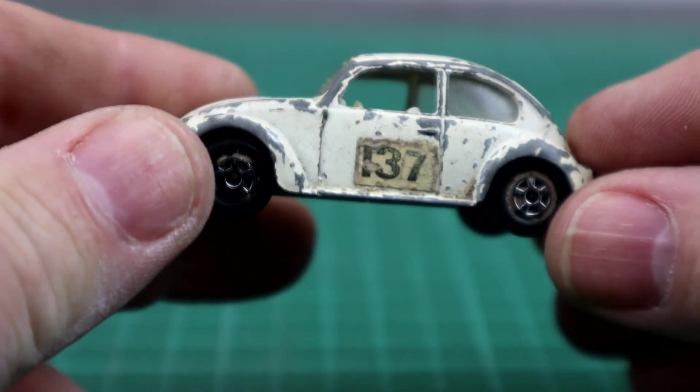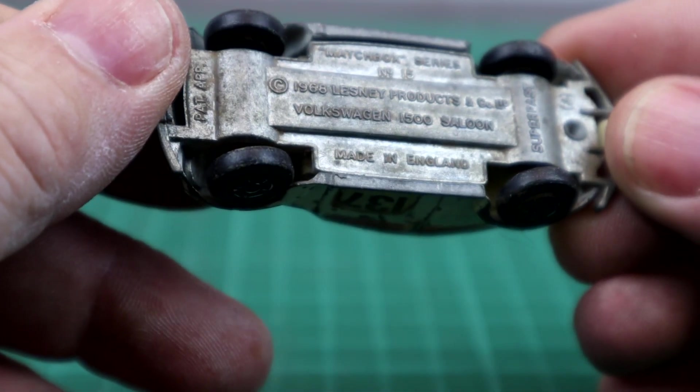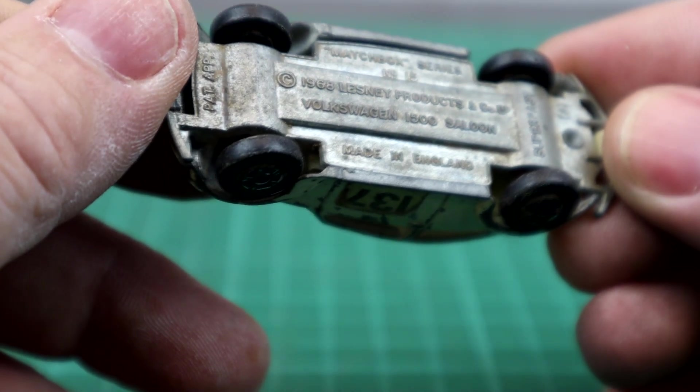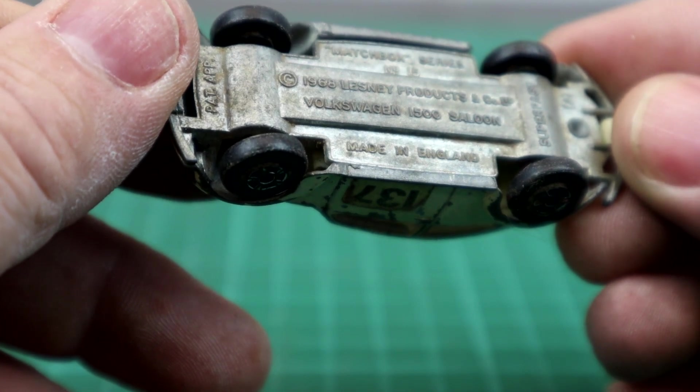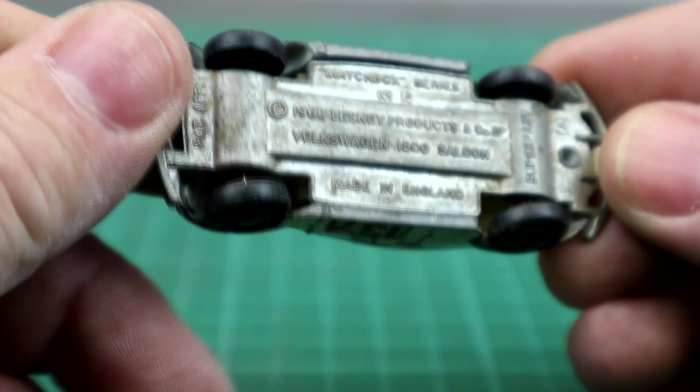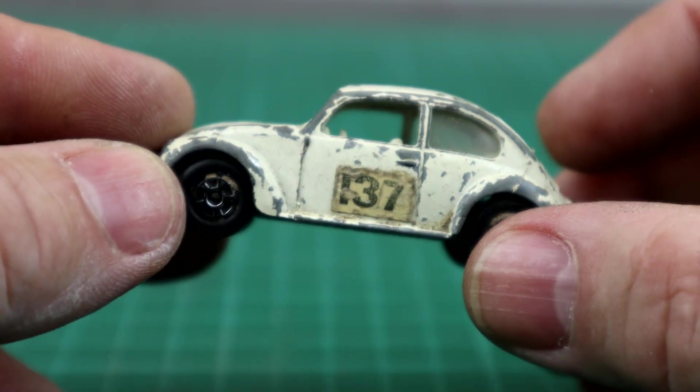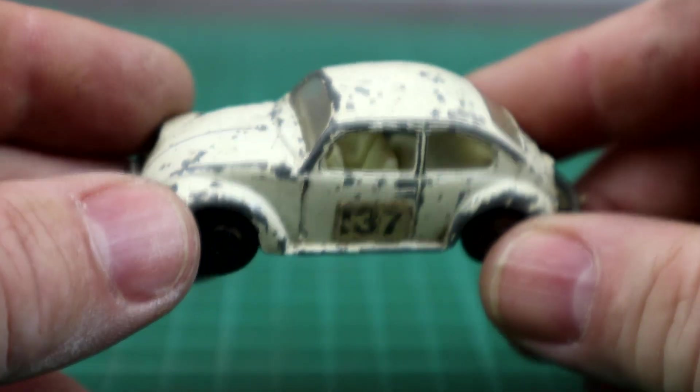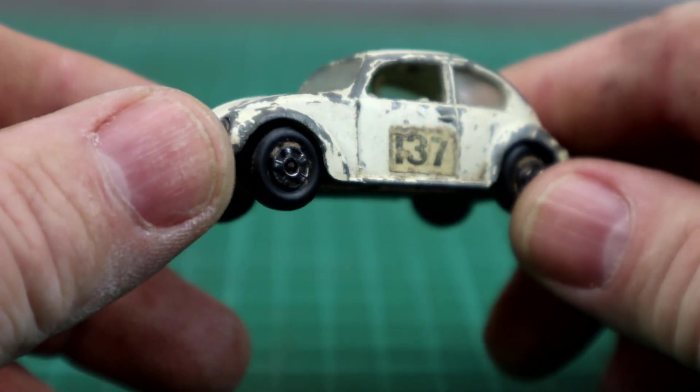Right, here we go then. This is our little Volkswagen Beetle No. 15 on the Lesney Matchbox Series. It's pretty play-worn, as you can probably see there. The underneath is very tarnished, and the wheels are actually bent. They've lost their silver paint on the hubcap. Plenty of paint chipped off here, although there's nothing broken on it by the looks of things. So I'm quite happy with that.